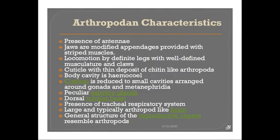Let us see what are the main arthropod characters present in the Peripatus, which actually relate the Onychophora with the Arthropoda. The first one is the presence of antennae. Even though antennae are present, we have to remember that they are not homologous with those of Arthropoda, but still the presence of antennae is one of the arthropodian characters found in Onychophora or Peripatus.